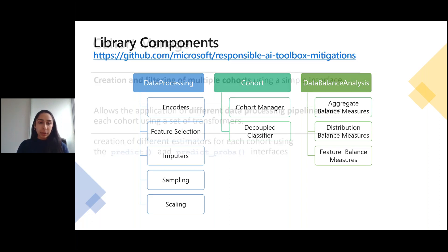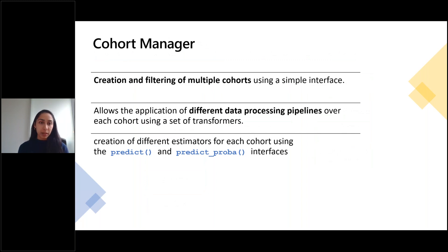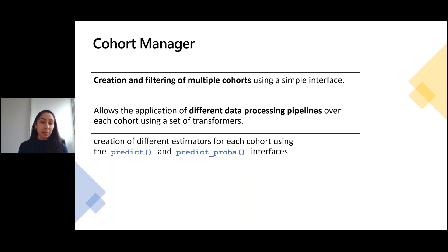The cohort manager allows you to create and filter cohorts within your training and testing data. You can specify certain values in certain columns — for example, looking at just married people, or houses older than a certain number of years. Once you've defined a cohort, you can apply different data processing pipelines to each cohort to mitigate issues specific to those groups, and you can train different estimators for each cohort using predict and predict-proba interfaces.